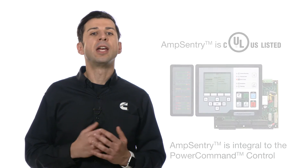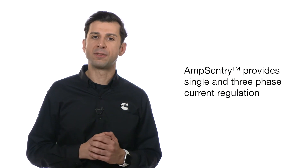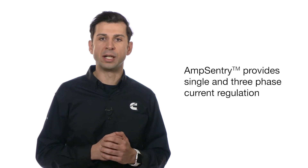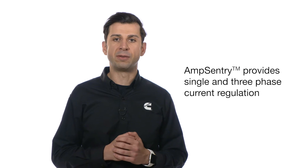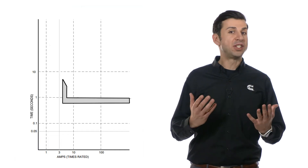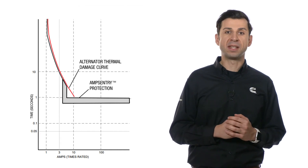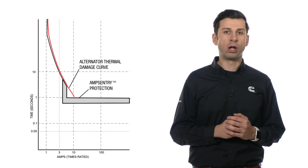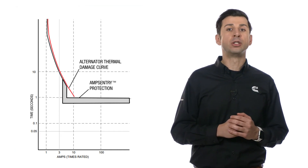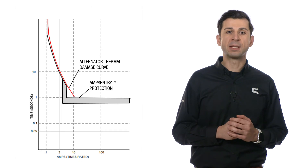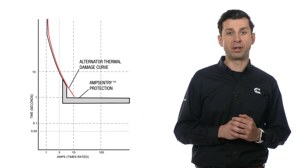It provides single and three-phase fault current regulation so that downstream protected devices have the maximum current available to quickly clear fault conditions without subjecting the alternator to potentially catastrophic failure conditions. As you can see from this graph, Amp Sentry hugs the alternator thermal damage curve to provide the maximum and best protection for the generator set.